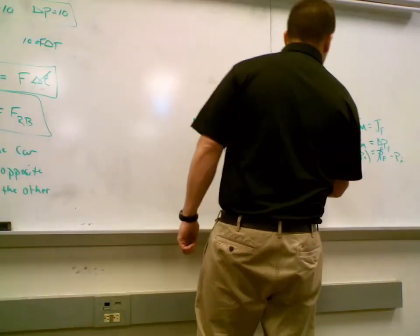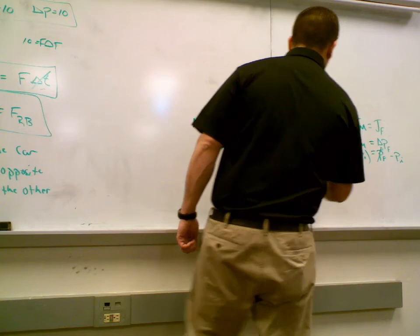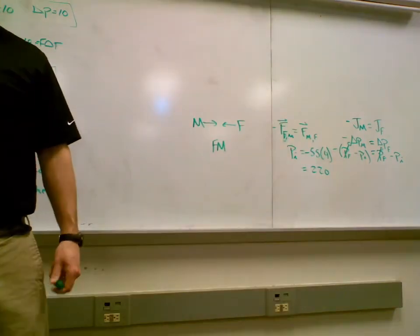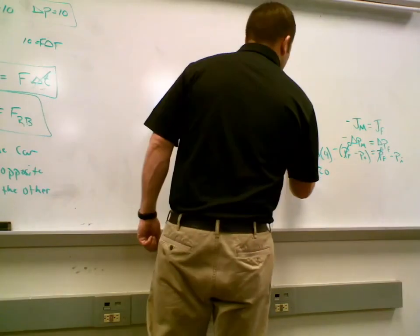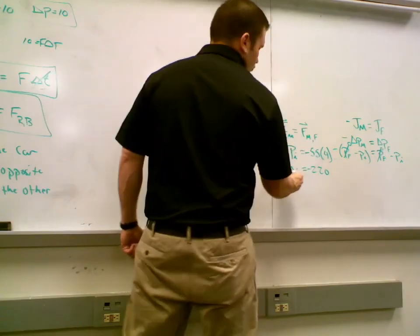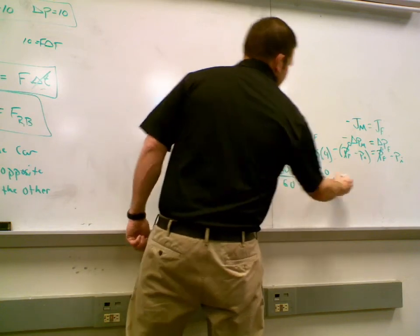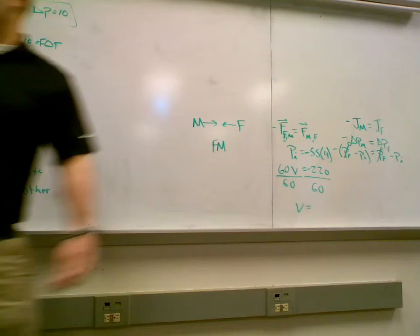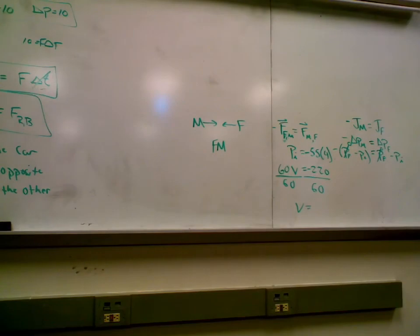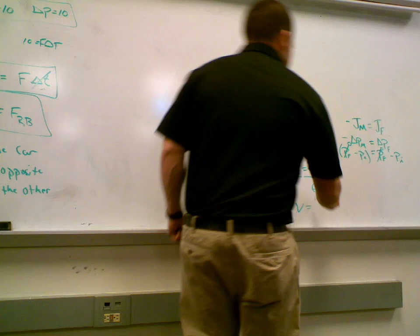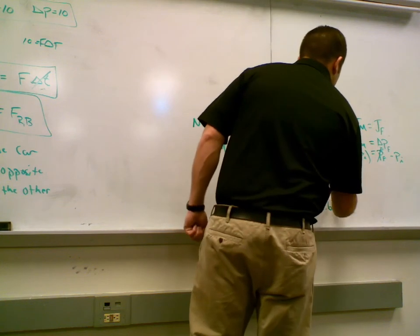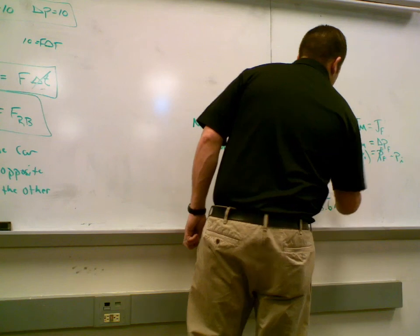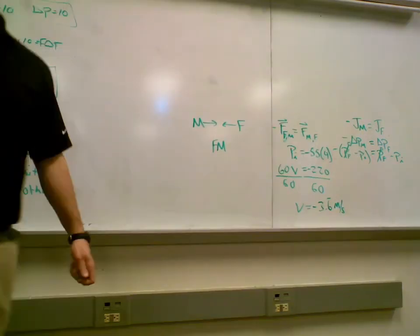220. 220? The midfielder was 60 kilograms, right? Yes. Right? So if we do 60V equals negative 220, divide by 60. Negative 220 divided by 60 is what? Negative 3.6. Okay. So that means the midfielder had a velocity of negative 3.6 meters per second before the collision.